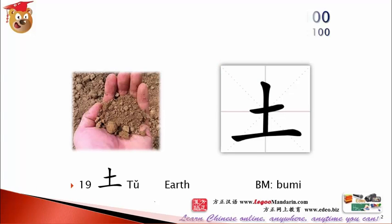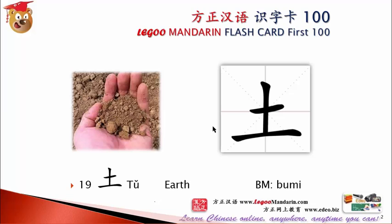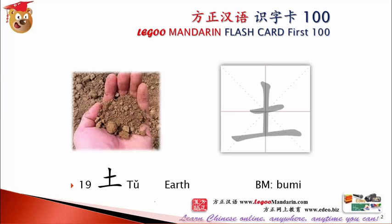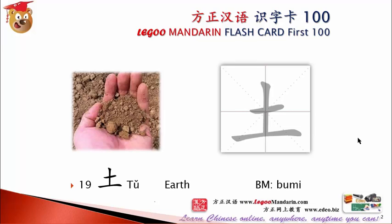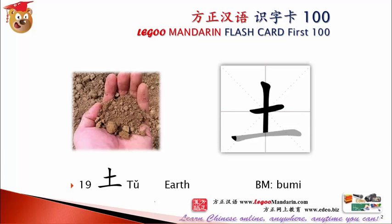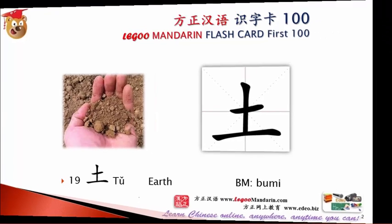土. The character 土 is written with horizontal strokes (横). 横 — first horizontal stroke, then 横 again — then the vertical. 土.